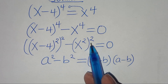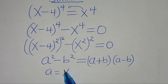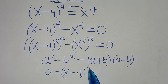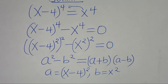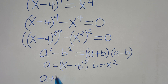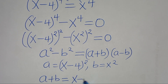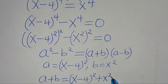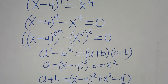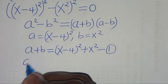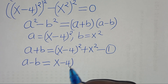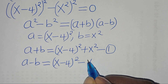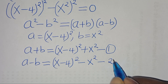From this equation, a equals (x minus 4) squared and b equals x squared. This means a plus b equals (x minus 4)² + x² — call this equation 1. And a minus b equals (x minus 4)² minus x squared — call this equation 2.